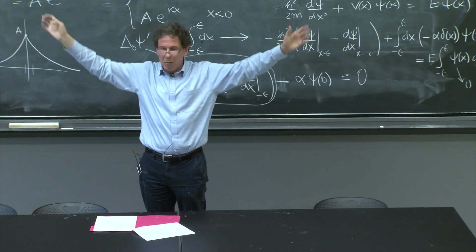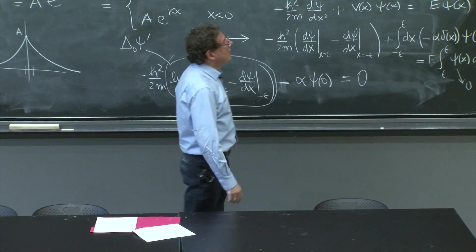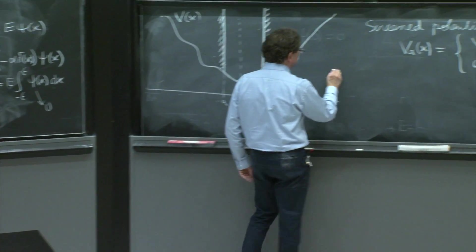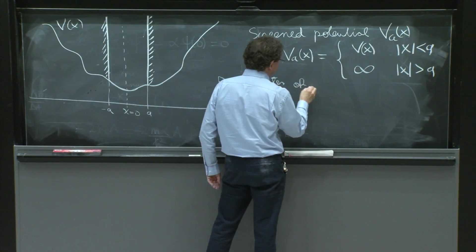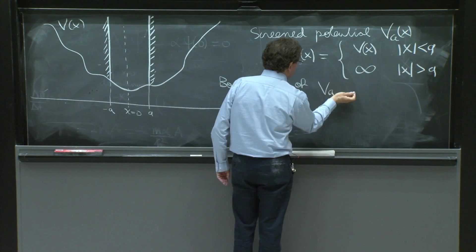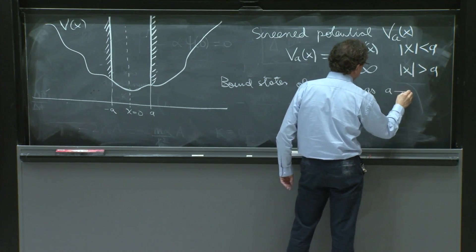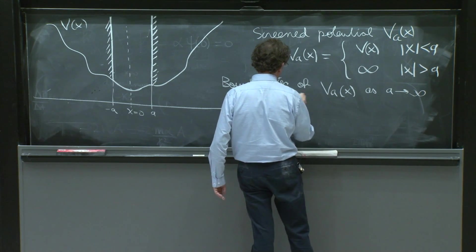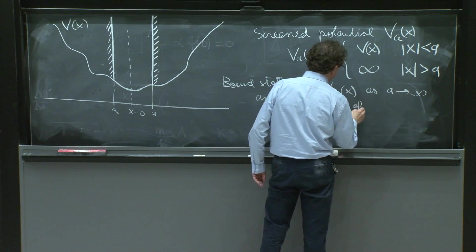And anyway, you can move it even further away. If you move it one light year away or two light years away, it shouldn't matter. So the idea is that the bound states of Vₐ of x as a goes to infinity are the bound states of V of x.